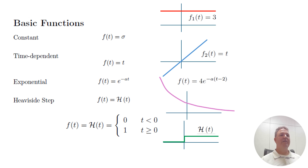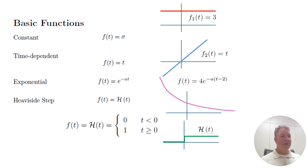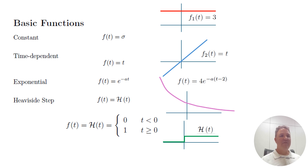Functions. We've got basic functions defined from t equals negative infinity to zero to positive infinity. Constant sigma is a function of time — it's always three or zero, slope is always zero, it's flat. The simple function f of t equals t is time dependent: at negative infinity it goes to negative infinity, at zero it's zero, at infinity it's infinity — just a line of slope one. The exponential function with a positive value for a starts at infinity for negative t, at t equals zero you get e to the zero which is one, and as t gets larger with positive a, you go towards zero. We also defined a heaviside step function that goes from zero to one at time zero. These are different elementary, very basic functions.